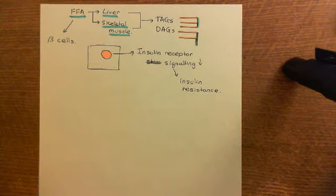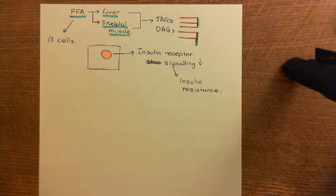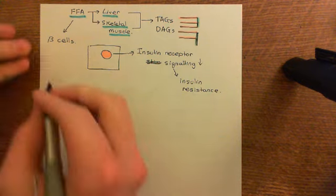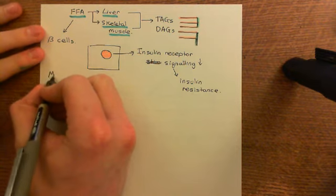Welcome back to this next video in which we are discussing diabetes mellitus and anti-diabetic drugs. We've now discussed type 1 diabetes and type 2 diabetes. What I now want to discuss is an example of a monogenic form of diabetes.